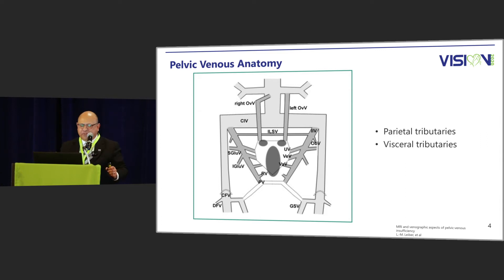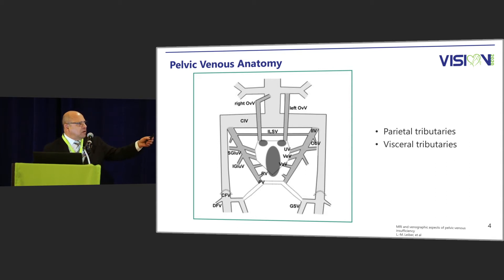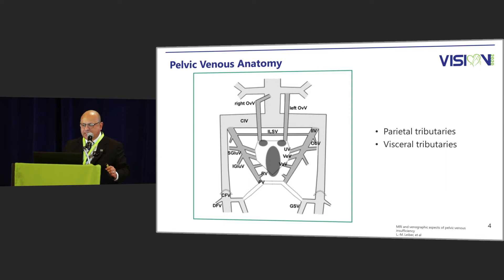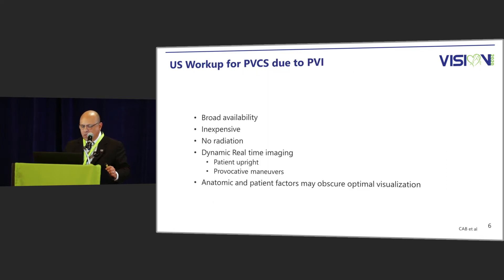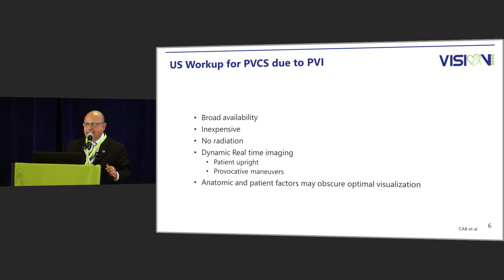This is a schematic of the pelvic anatomy, which is extremely complicated — parietal tributaries, visceral tributaries, associations with the cava and renal veins. In the pelvis itself the communications are extensive, and notice how communications go down to the legs for the great saphenous veins — these are where we see breakthrough escape veins in some of our leg patients. The workup includes ultrasound, MRI, and CT.